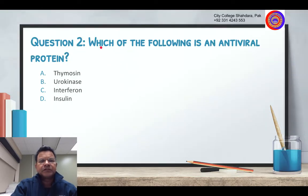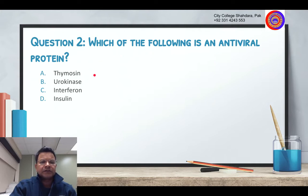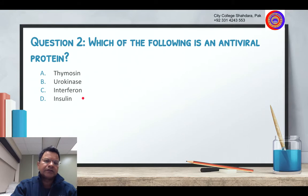Question number two: which of the following is an anti-viral protein? Options are thymosin, urokinase, interferon, and insulin.